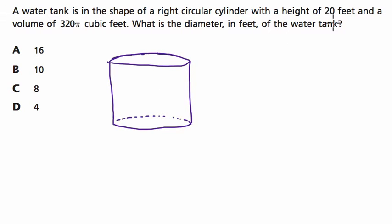And they tell us that the height is 20 feet, so I start labeling that right away. That's our height. From one circle to the other, the height is 20 feet. And that's all they tell us. They tell us the height is 20 and then the total volume is 320π cubic feet.